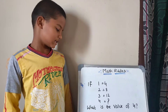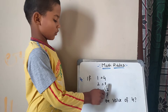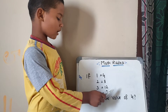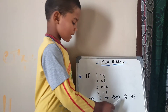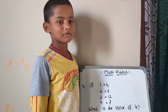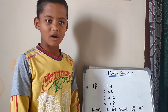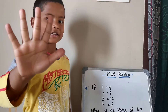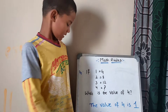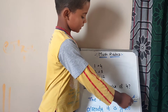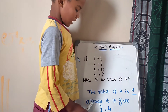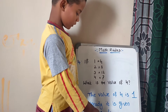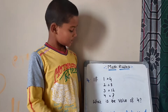Video number 4. If 1 equals 4, 2 equals 8, 3 equals 12, then 4 equals how much? What is the value of 4? Your time starts now. Answer is, the value of 4 is 1. It is already given — 1 is equal to 4, as stated in the question itself.